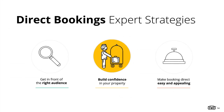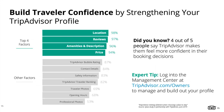Moving on to the second of our three pillars for driving direct bookings: building traveler confidence in booking with your property. TripAdvisor is a powerful tool for consumers seeking out value, choice, and information. Properties should work together with TripAdvisor to ensure that their property is accurately reflected on the site. We suggest focusing on the top factors that influence a traveler's booking decision — specifically the top four aspects of your TripAdvisor listing: location, reviews, amenities and description, and price.